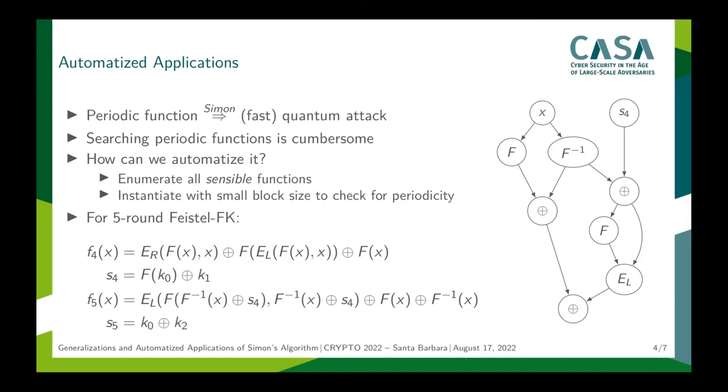This was found using a Sage implementation of our algorithm and leads to a new quantum attack on the five-round Feistel-FK construction with an internal permutation. Notice that a full attack actually needs two functions that are called F4 and F5 in our paper and that the period of F4 is used as a constant in F5.